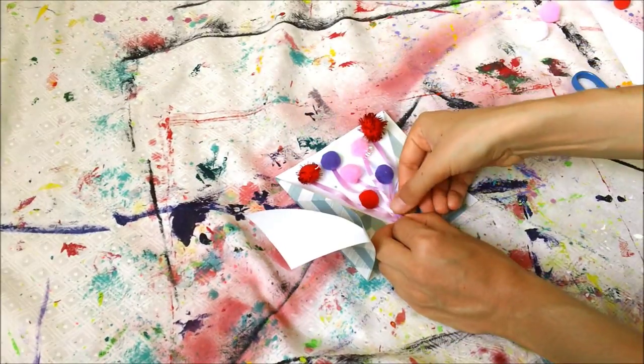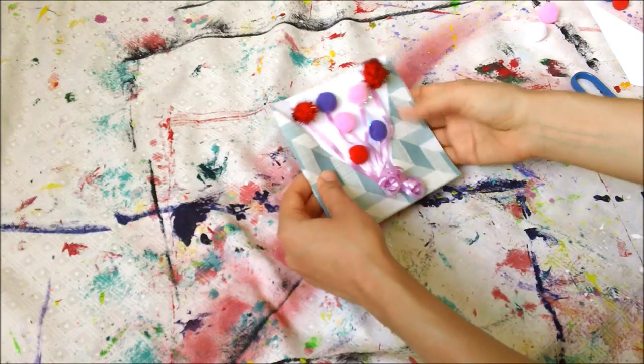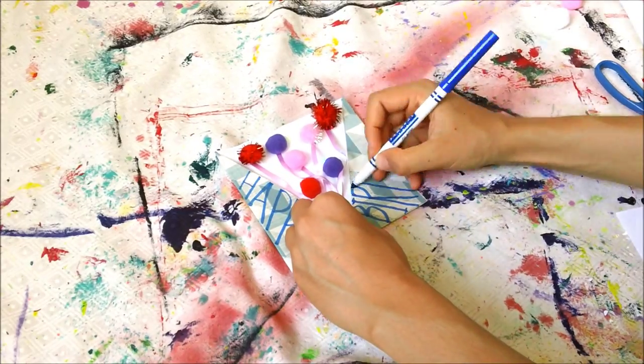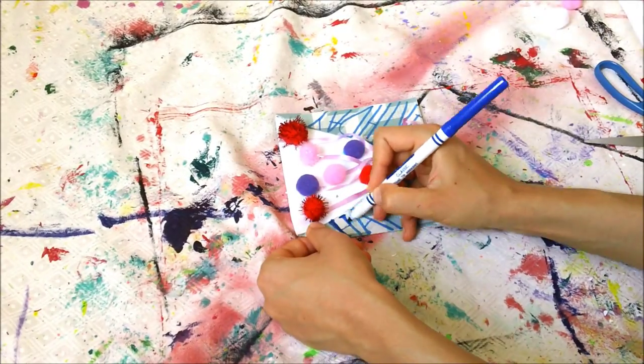Gather the ribbon pieces together and tape them. On the front let's write happy birthday and I'm also decorating the letters with glitter glue.